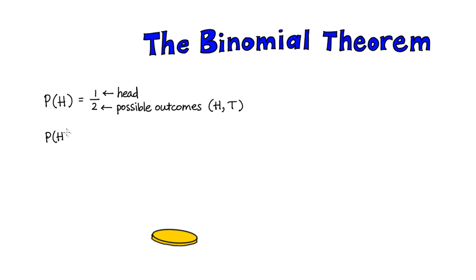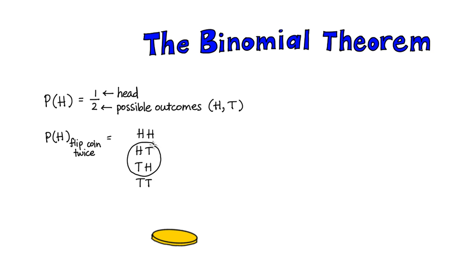What's the probability of getting one head if you flip the coin twice? In this case, there aren't two outcomes anymore. You could get heads and then heads, heads and then tails, tails and then heads, or tails and then tails. Out of all these outcomes, there are two possibilities where you get one head, so the probability is two out of four, which is again one half.